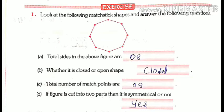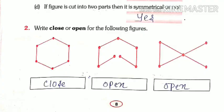Question D: if figure is cut into two parts then is it symmetrical or not. To understand this question, we need to understand the meaning of symmetrical. When we divide any figure from the middle into two parts and both parts are exactly the same, we call it a symmetric figure. This octagon figure divides into two equal parts, so yes, this figure is symmetrical.